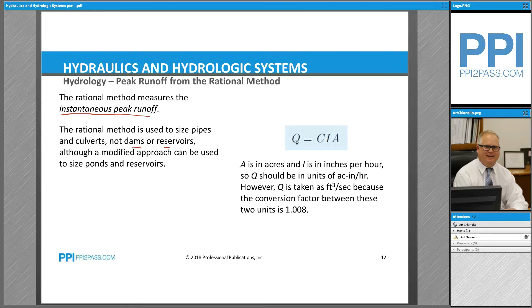Is it lawn, is it asphalt, is it concrete, is it rooftop? Whatever the surface is that the precipitation is landing on will have a certain runoff coefficient. So given these variables, if I is in inches per hour and A is in acres...